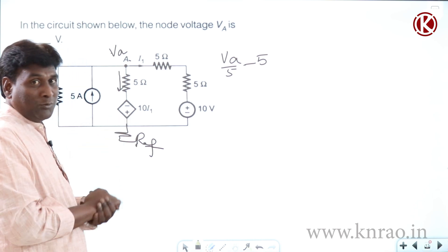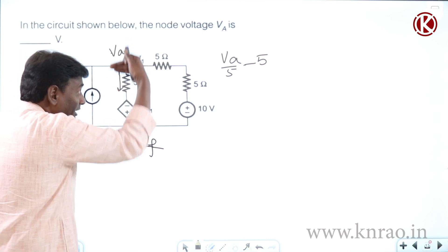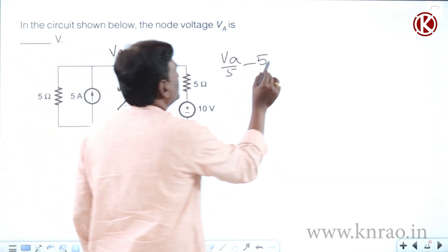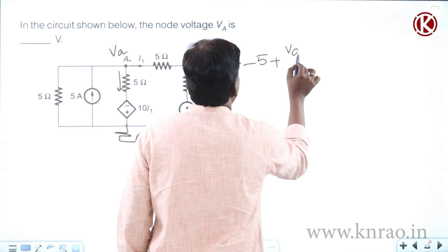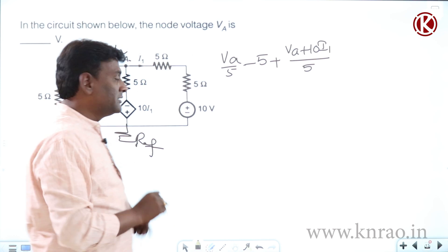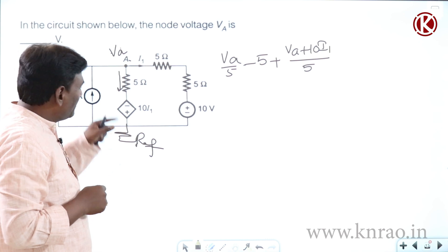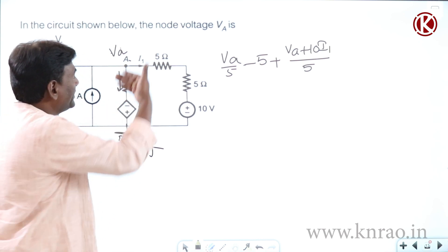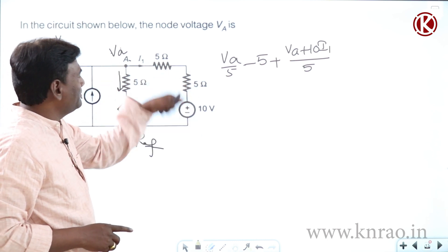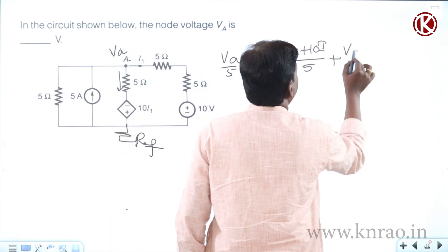Now for the next branch: this voltage source is trying to drive the current in this direction, so the leaving current is VA plus 10 divided by 5. This is because the negative is on the upper side and positive is on the bottom side, making it VA plus 10 by 5. And then the last leaving current is VA minus 10 by 10.